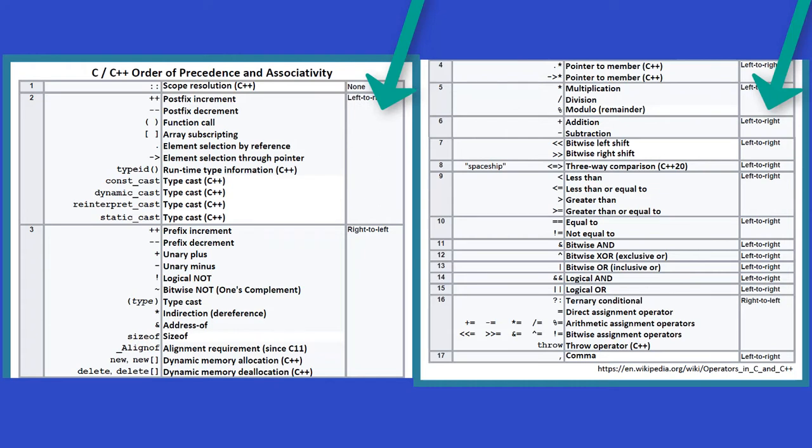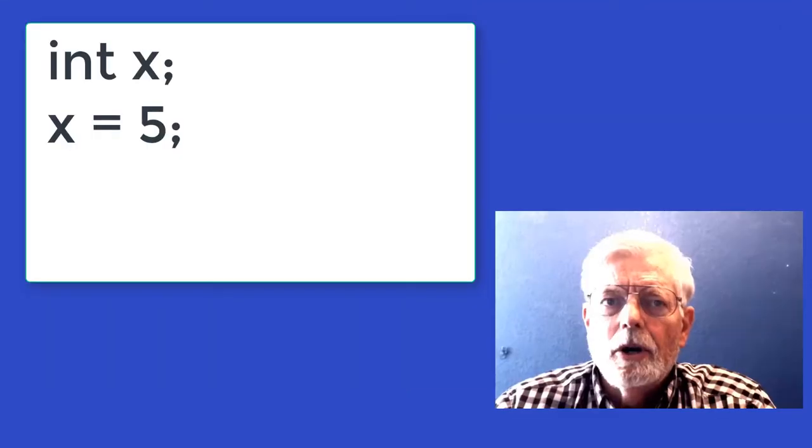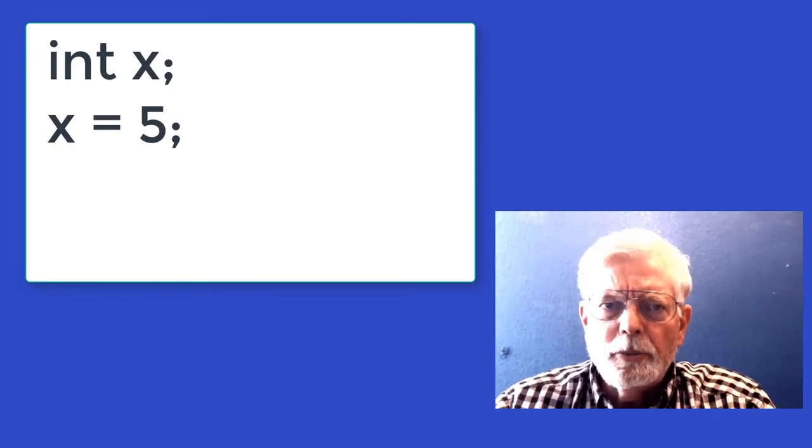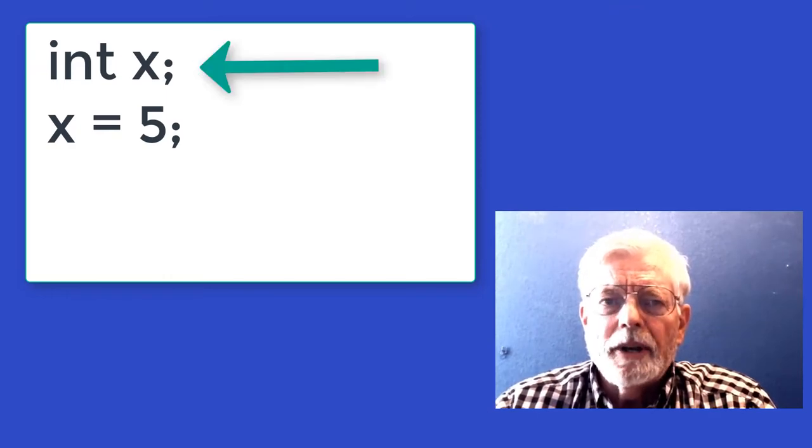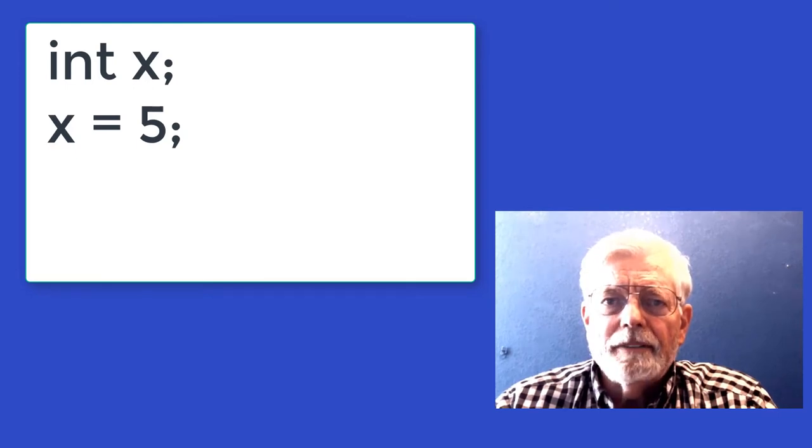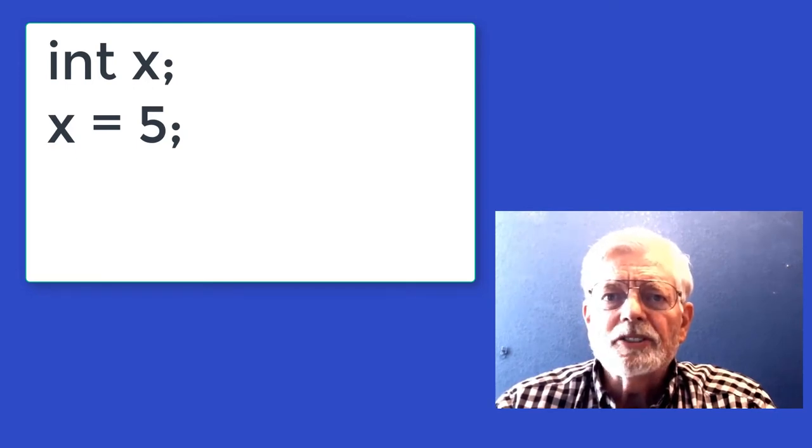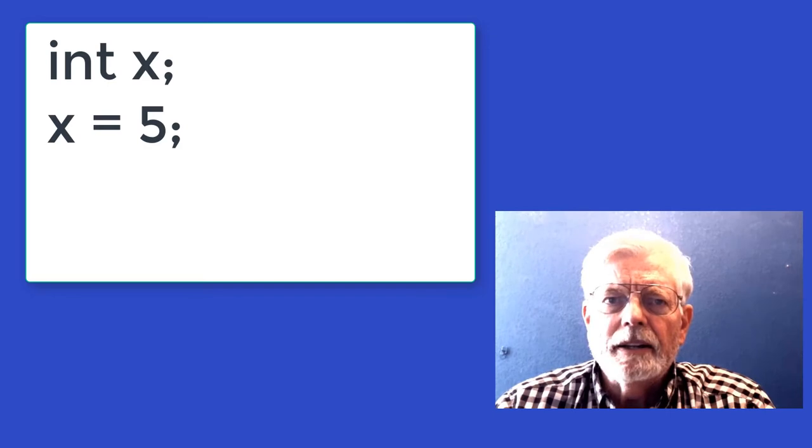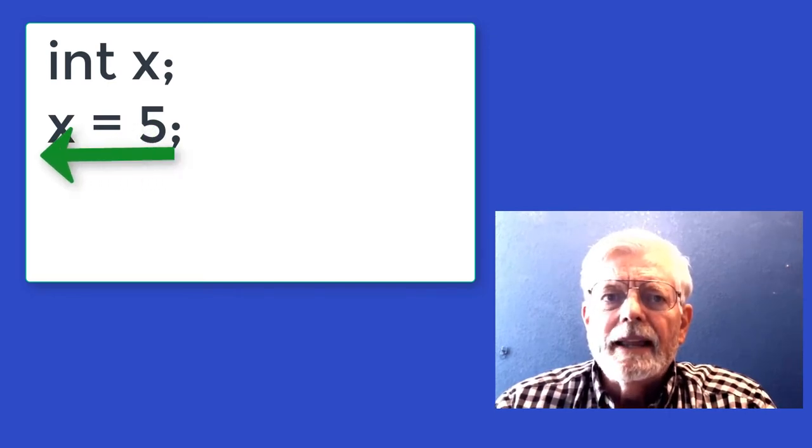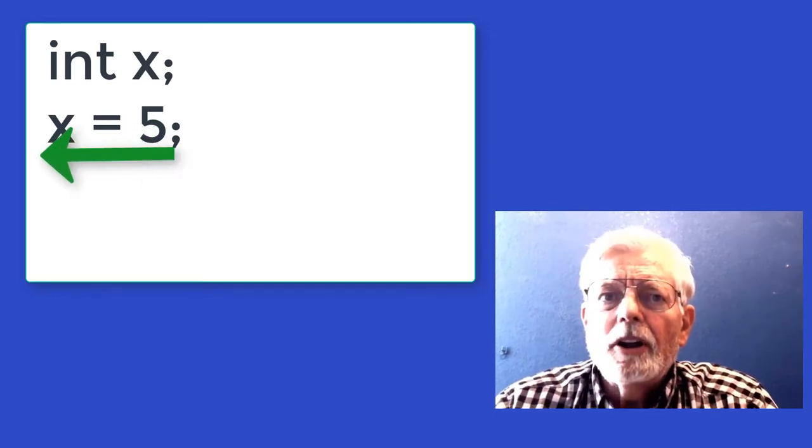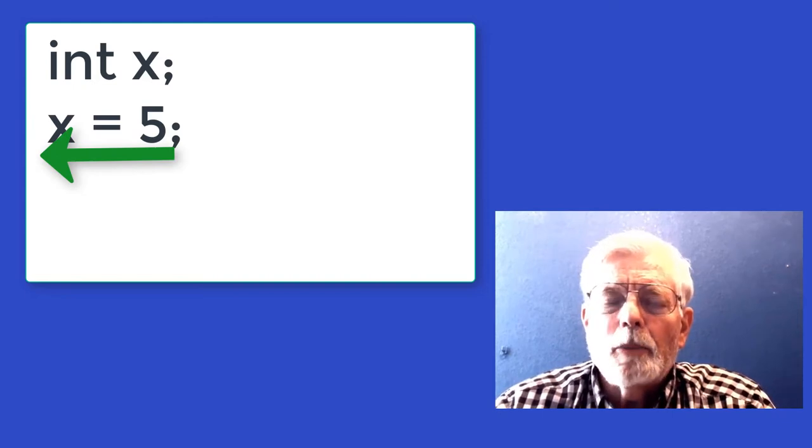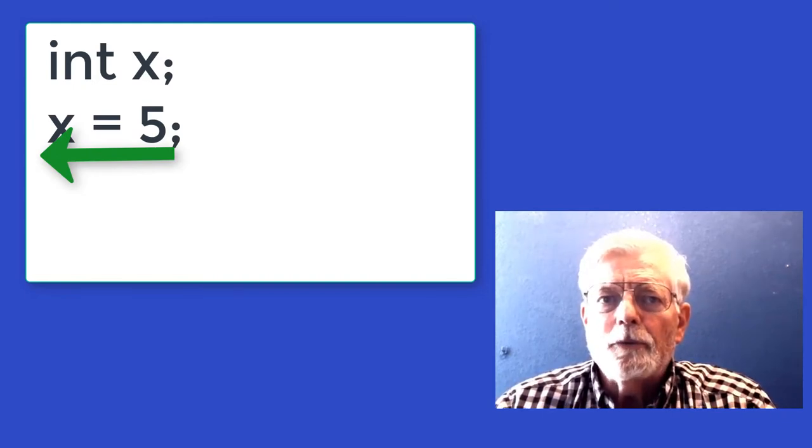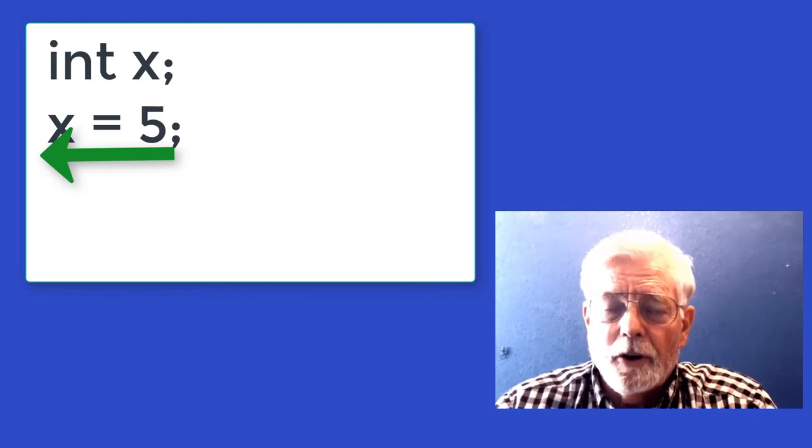The last column shows the associativity of the operators being either left to right or right to left for the order in which side of the operator gets evaluated first. For example, assume that the variable x has already been declared. Then, x = 5 has only the assignment operator (equal sign) that is executed from right to left. Anything that needs to be done on the right side of the assignment operator is done first before the result is stored into the variable x.